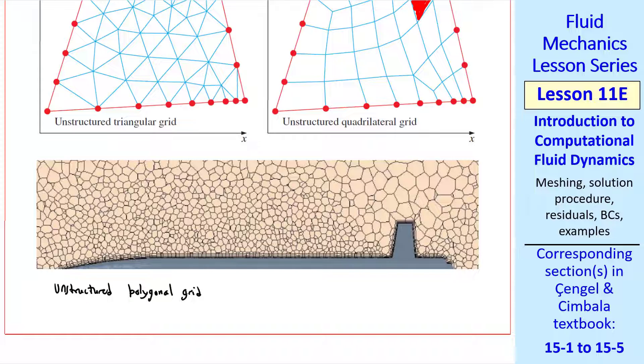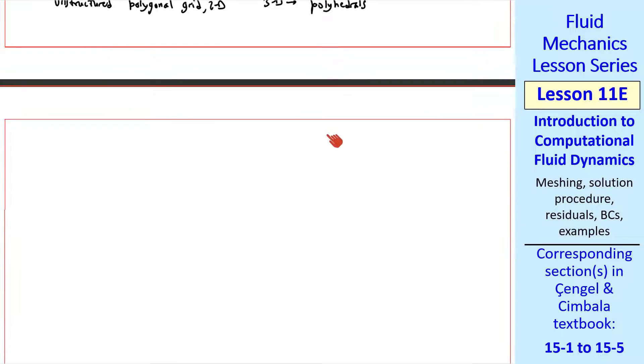This particular case is called a hybrid grid, because it has a structured mesh near the wall, and then polygons outside the wall region. This is pretty typical because of thin boundary layers near the wall. This is an unstructured polygonal grid, or mesh, in 2D. The 3D analog is polyhedrals, and they can have any number of edges or sides.